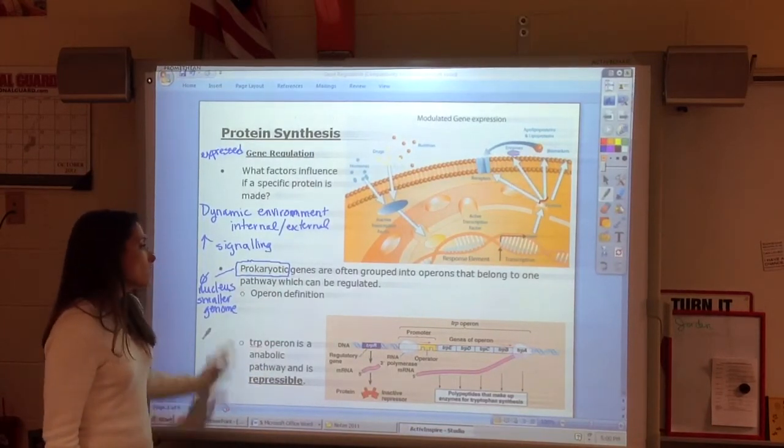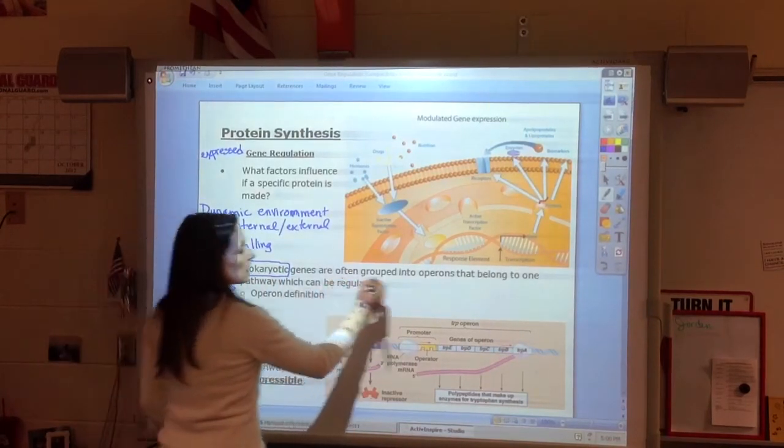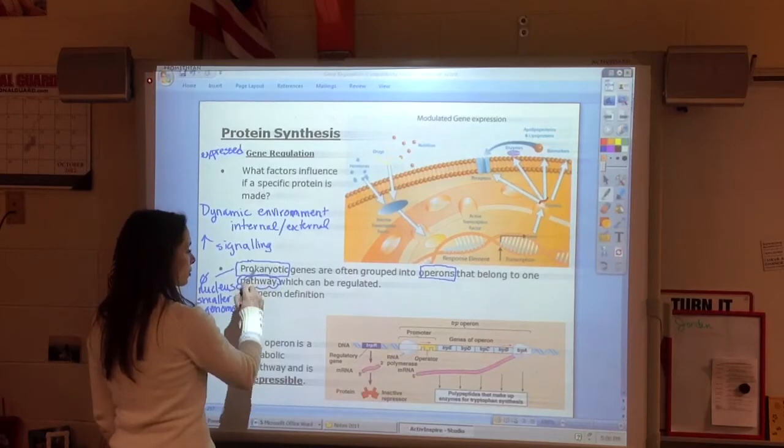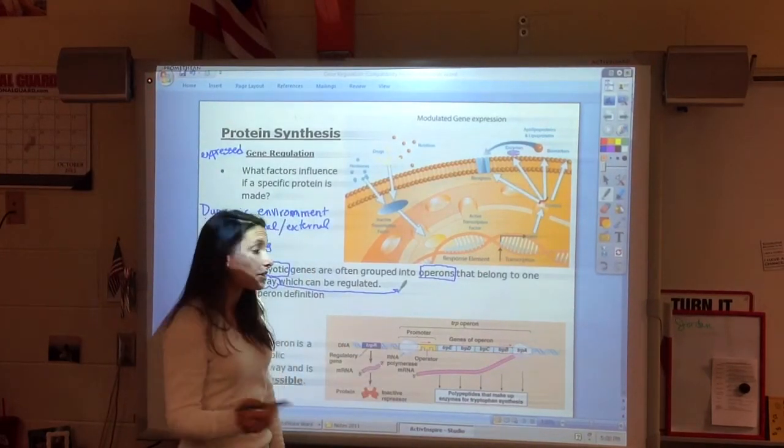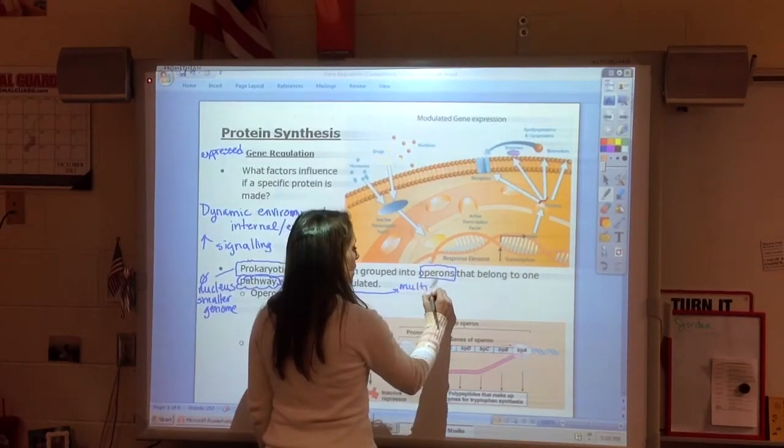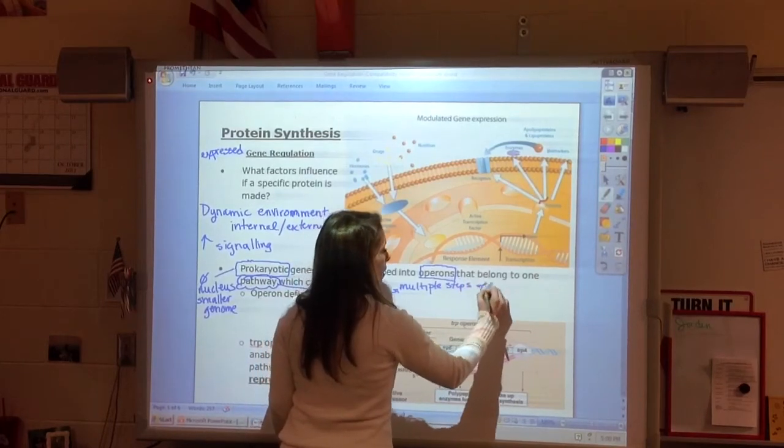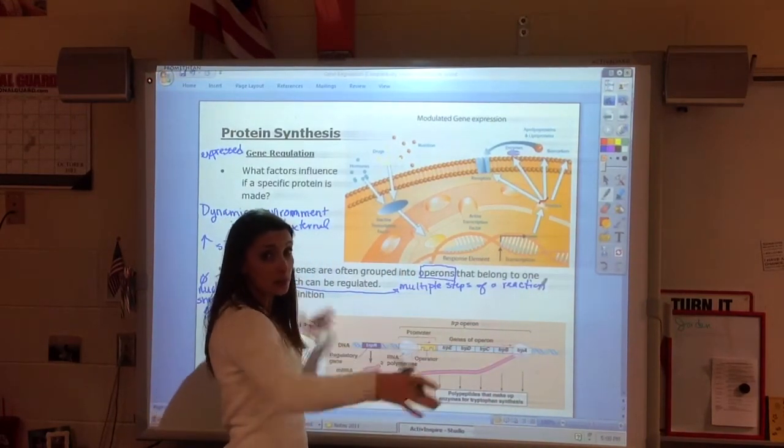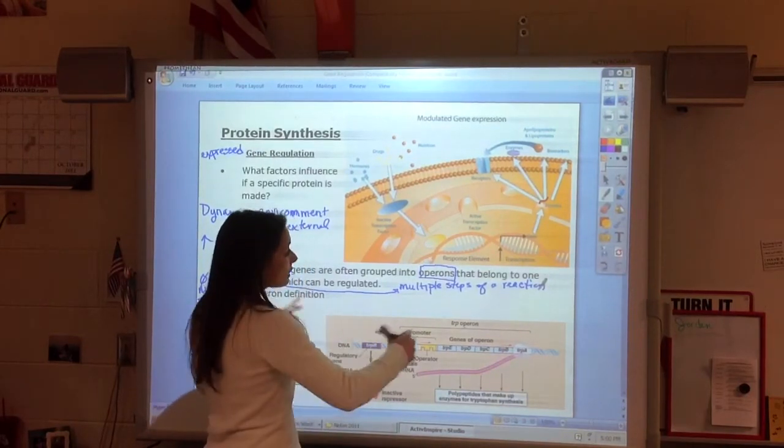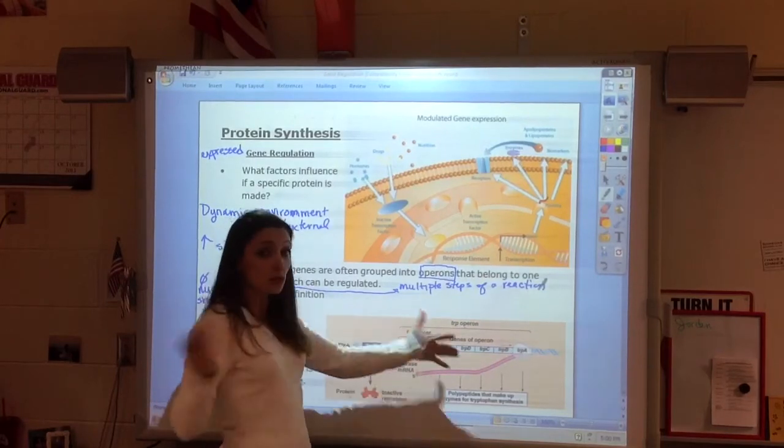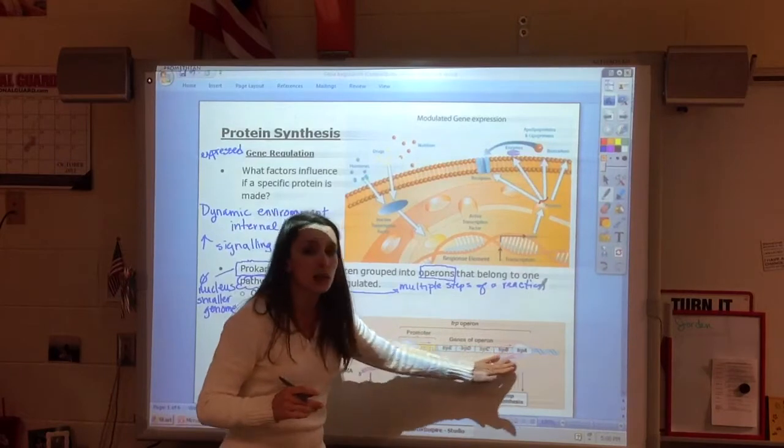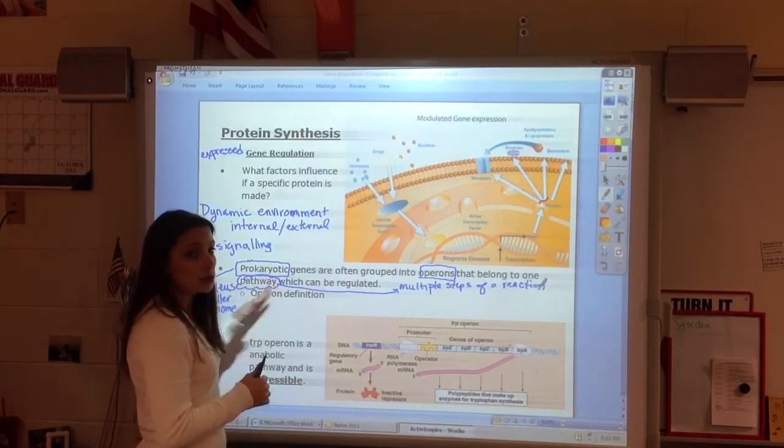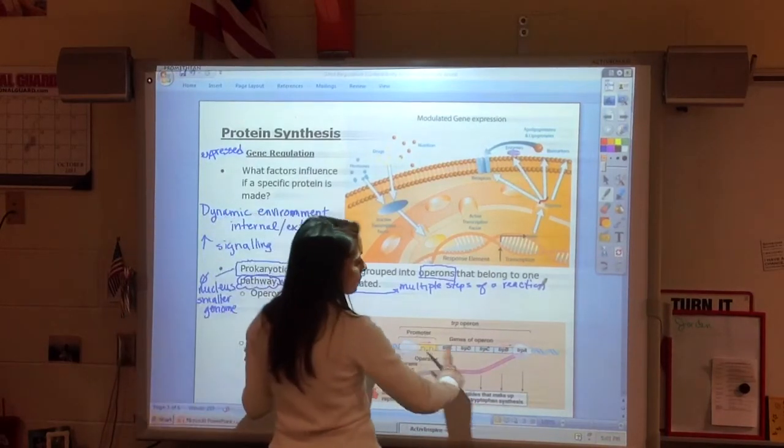Prokaryotic genes are often grouped into what we call operons that belong to the pathway which can be regulated. This word pathway is actually really important. If we think back to glycolysis, that's a pathway with a series of steps that result in producing pyruvate. Each step has an enzyme. If we're trying to do a series of reactions, it makes sense for those enzymes to all be grouped together. Because when I need one, I probably need them all. In prokaryotes, their genes are really organized into these functional units called an operon.